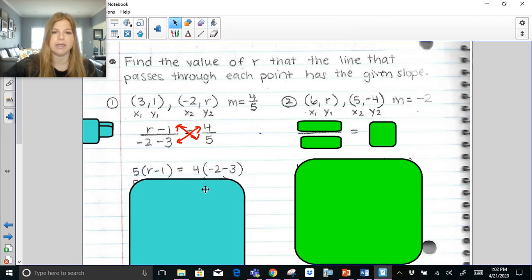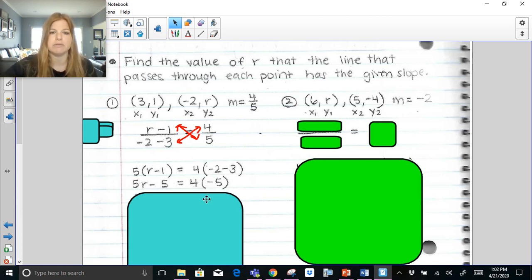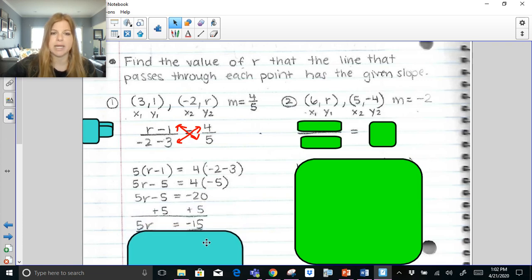And I would just simply need to cross multiply these values here, solving a proportion to get values. So I'm doing 5 times (r minus 1) and it should be set equal to 4 times negative 2 minus 3. Now over here 5 times (r minus 1) becomes 5r minus 5. And then here I can clean this up. Negative 2 minus 3 is negative 5. So here is what I've got. 5r minus 5 equals 4 times negative 5. And guys, this is just a regular equation to solve. This becomes 5r minus 5 equals negative 20. Add 5 on both sides. Divide both sides by 5. And we end up getting r equals negative 3.